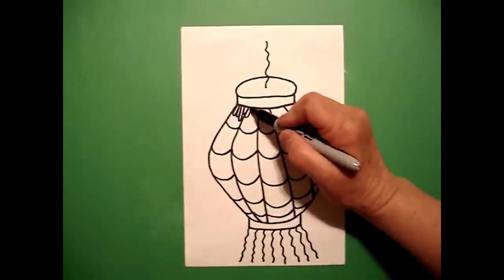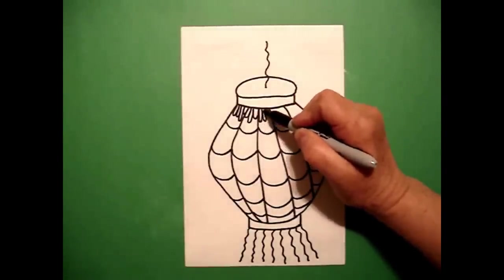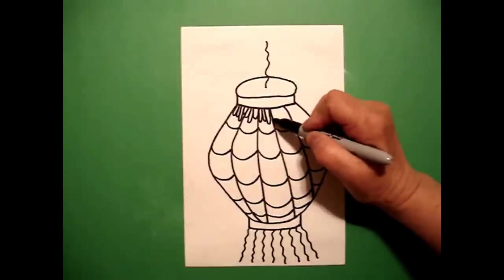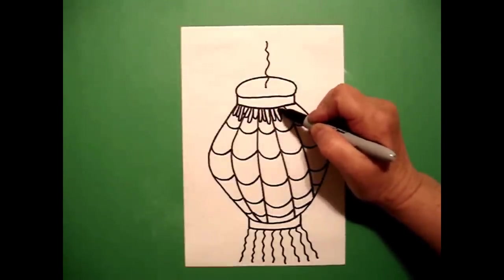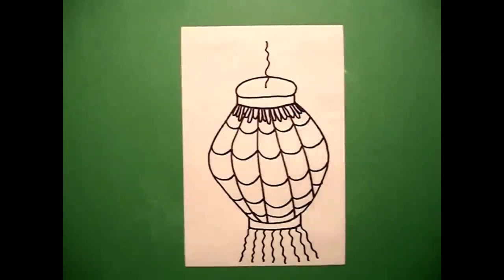Little curve line, bigger curve line, little curve line, all the way across, however many you can fit in. Just to give my top of my lantern a little decorative border all the way across.